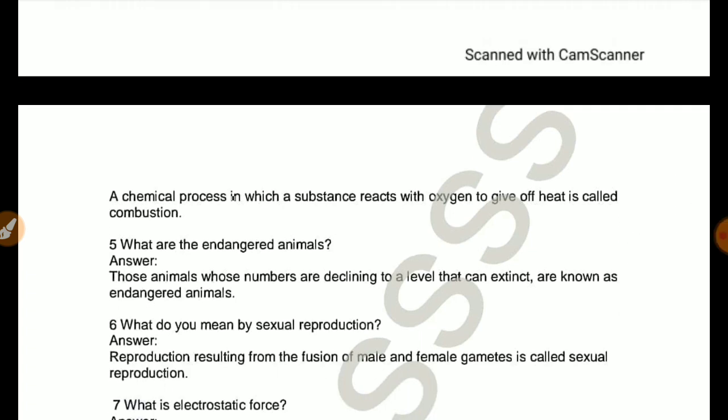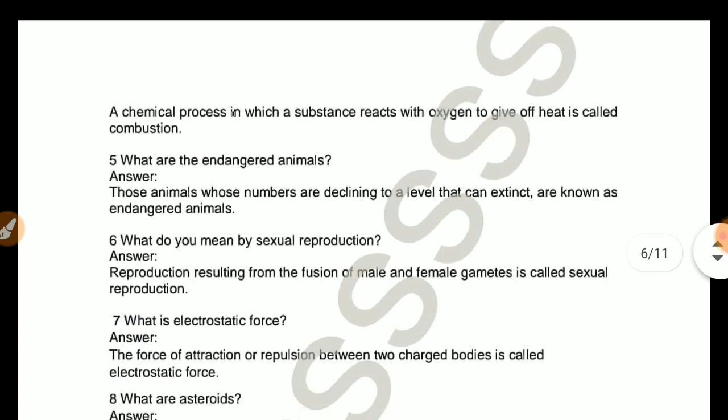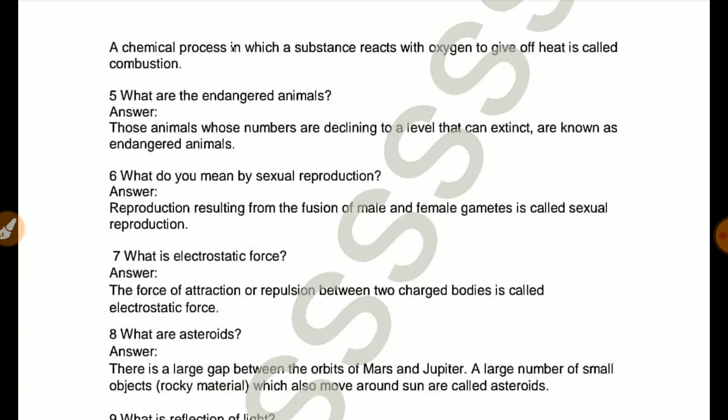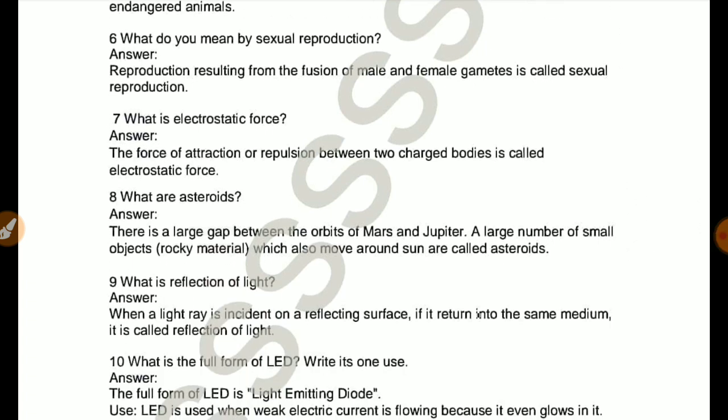What are endangered animals? Those animals whose numbers are declining to a level that they can extinct are known as endangered animals. What do you mean by sexual reproduction? Reproduction resulting from the fusion of male and female gametes is called sexual reproduction. What is electrostatic force? The force of attraction or repulsion between two charged bodies is called electrostatic force.